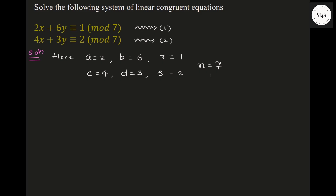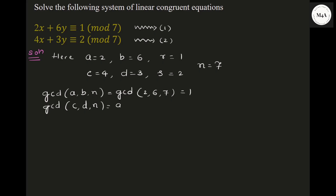Now we need to check the GCDs — whether the system has a solution or not. GCD of A, B, N — that is GCD(2, 6, 7) — is 1. And GCD of C, D, N — that is GCD(4, 3, 7) — is also 1. This means a solution exists.